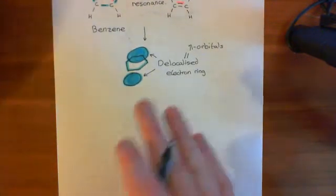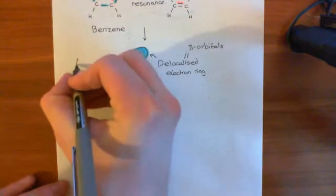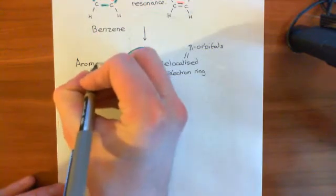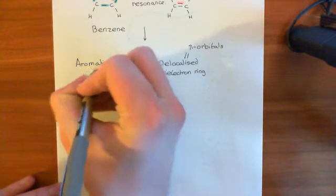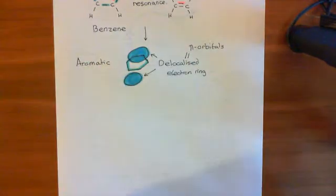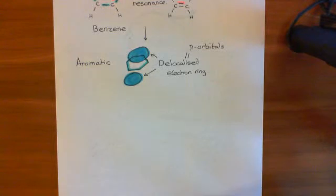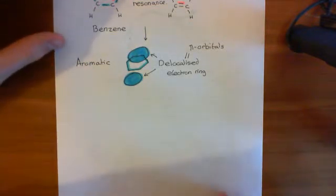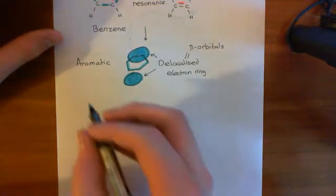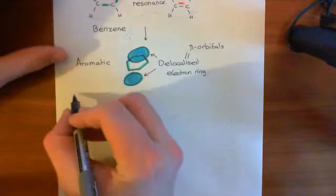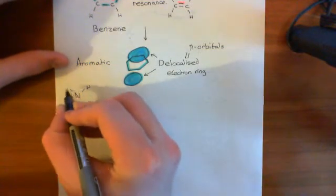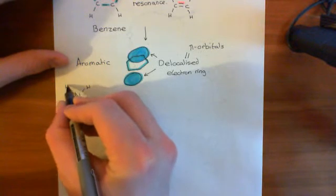I have told you about what it means for a chemical structure to be aromatic — it means that it has these delocalized electron rings or pi orbitals. Let me give you some examples of aromatic amino acids. The major examples are tryptophan, tyrosine, and phenylalanine.